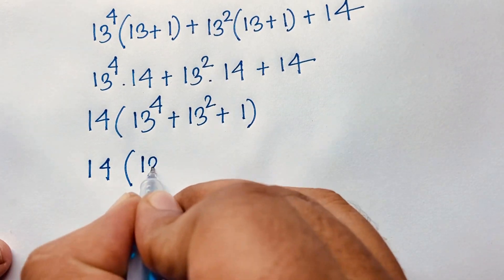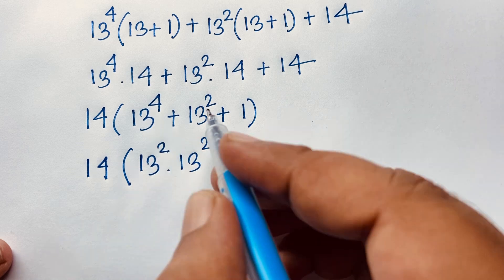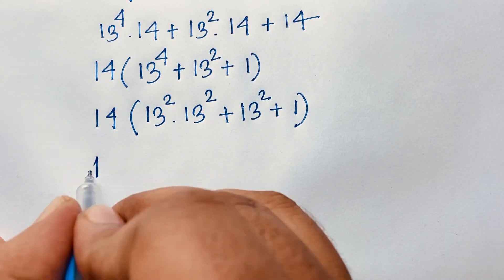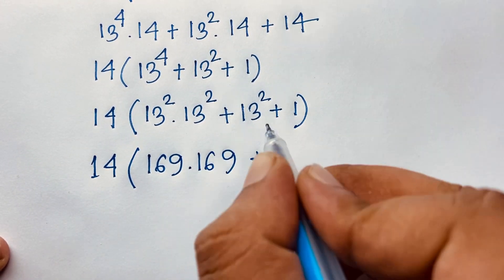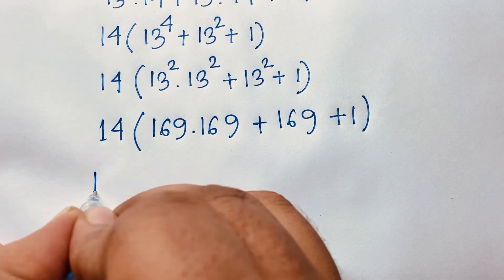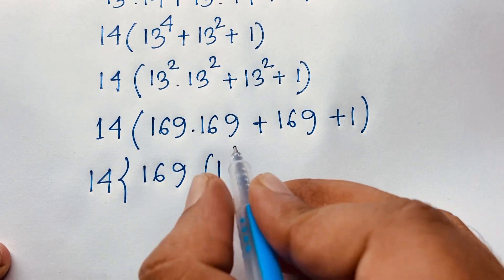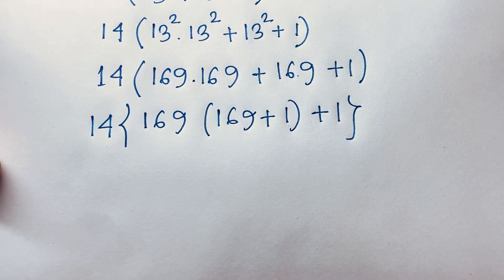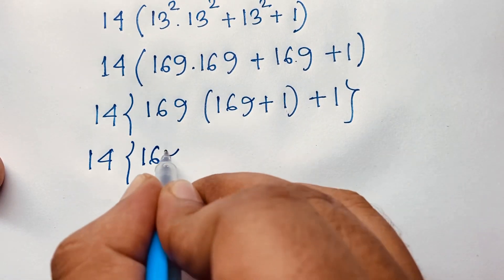We know that 13 power 4 equals 13 power 2 times 13 power 2, and 13 power 2 equals 169. So 13 power 4 is 169 times 169, plus 13 power 2 which is 169, plus 1. Now we have 14 times (169 times 169 plus 169 plus 1). Taking 169 as common gives 169 times (169 plus 1) plus 1, which is 169 times 170 plus 1.